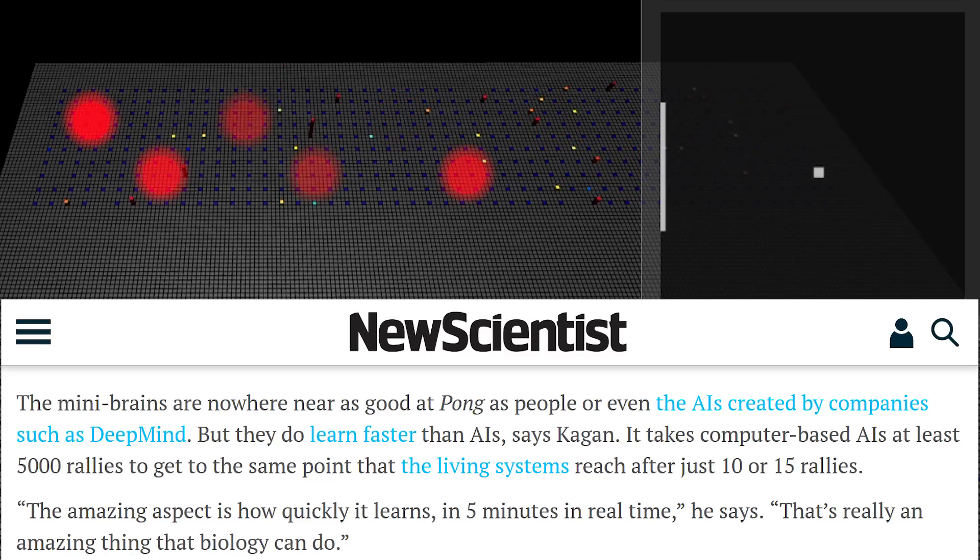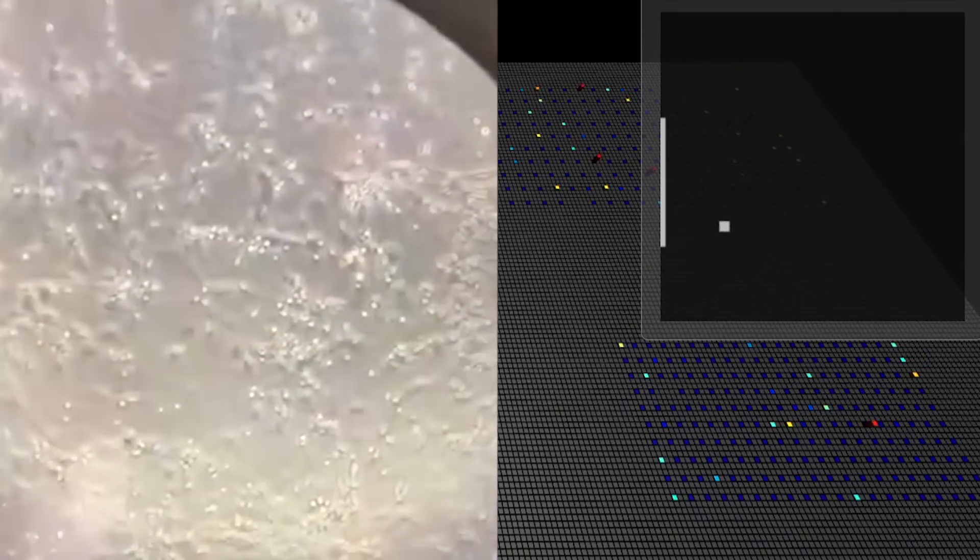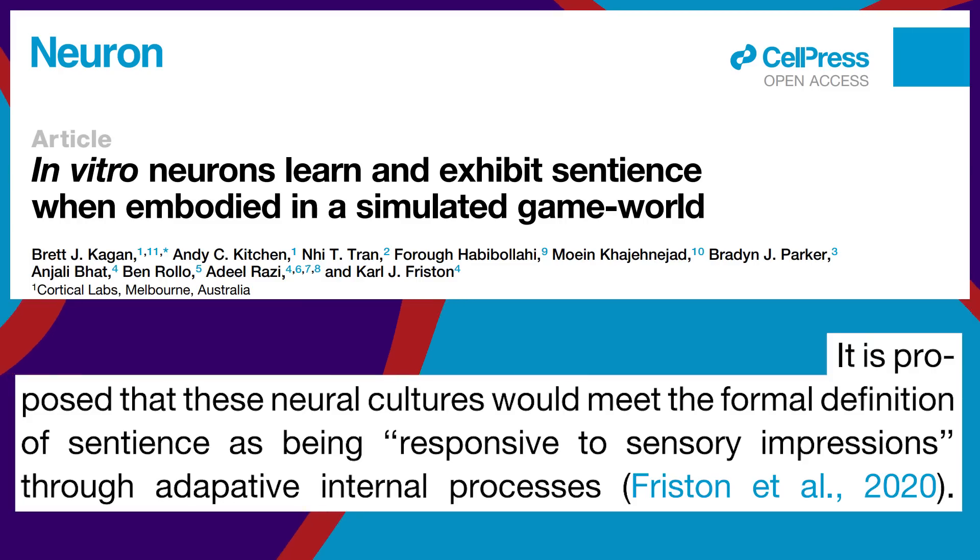Sure, a computer could simulate those 5,000 rallies way faster, but biological systems are natural problem solvers, and research like this might help us understand how they learn so efficiently. So it's a cool study. But did they really demonstrate sentience?